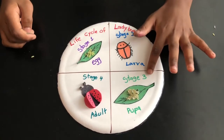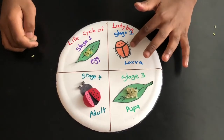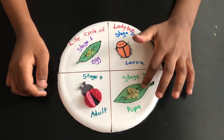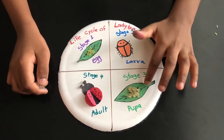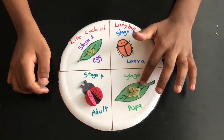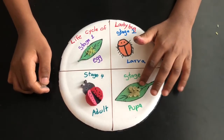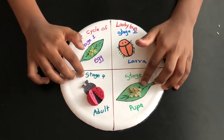Stage 3: The larva changes and turns into a pupa.